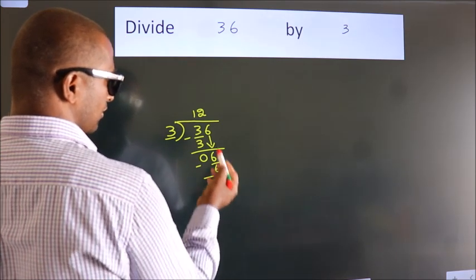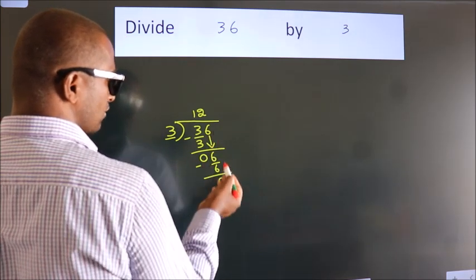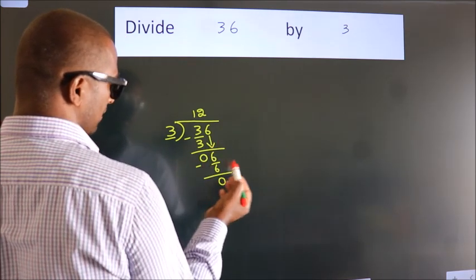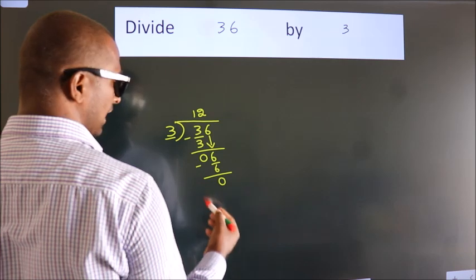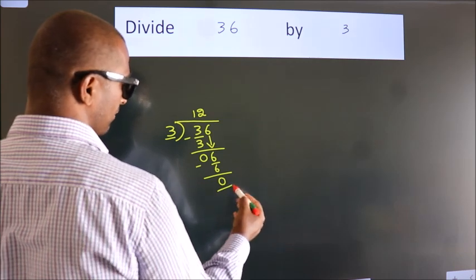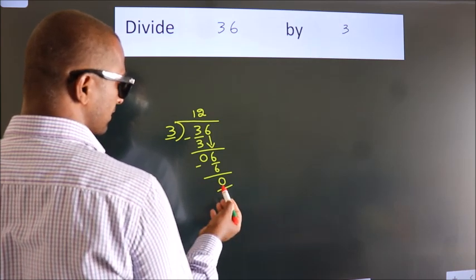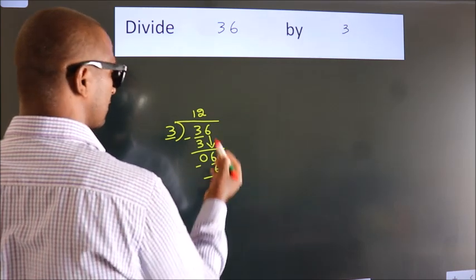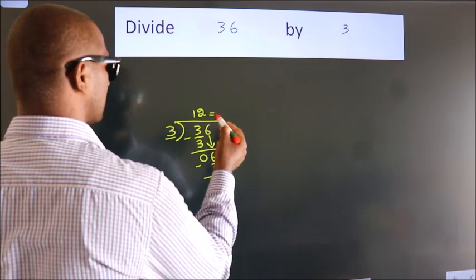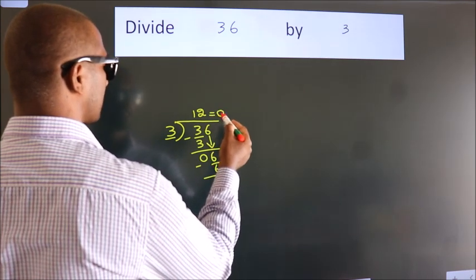After this, no more numbers to bring down. And we got remainder 0. So this is our quotient.